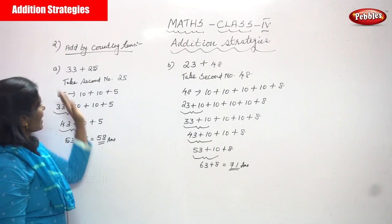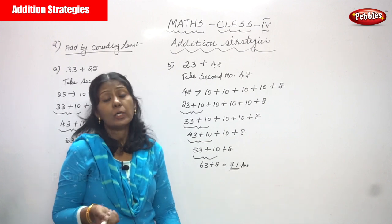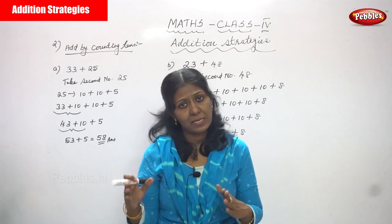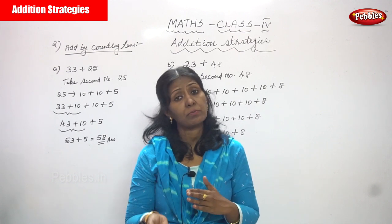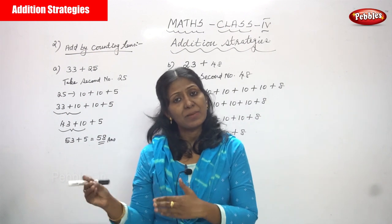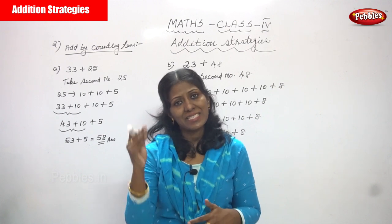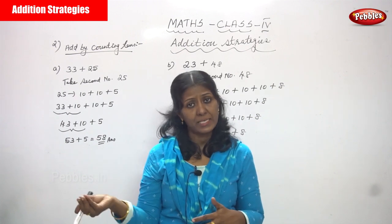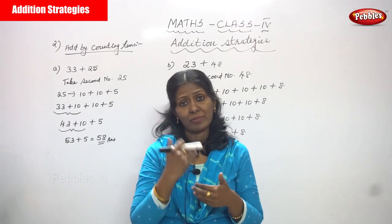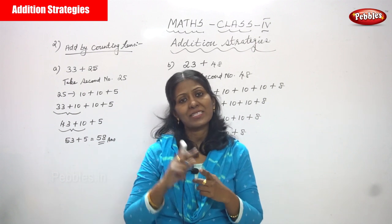I'll repeat once again. Add by counting tens: the first number is 33 and the second number is 25. I take the second number 25 and split it by counting tens — so 25 is equal to 10 plus 10 plus 5.